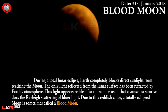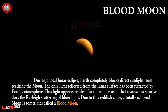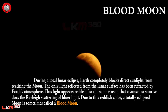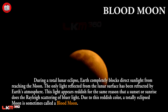During a total lunar eclipse, Earth completely blocks direct sunlight from reaching the moon. The only light reflected from the lunar surface has been refracted by Earth's atmosphere. This light appears reddish for the same reason that a sunset or sunrise does — the scattering of blue light. Due to this reddish color, a totally eclipsed moon is sometimes called a blood moon.